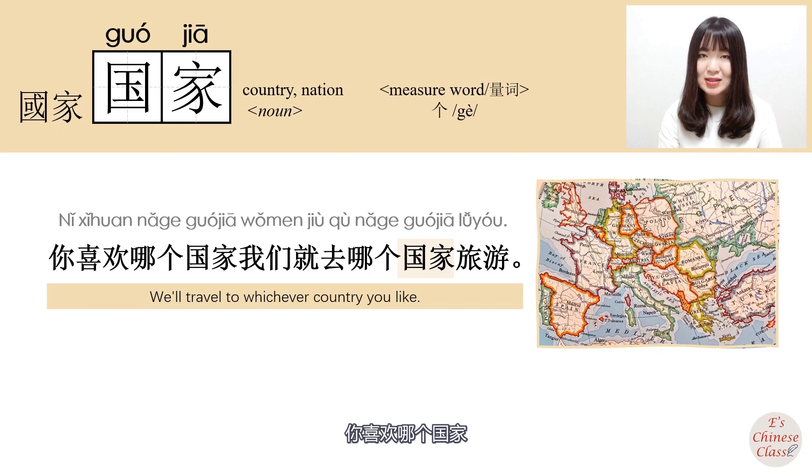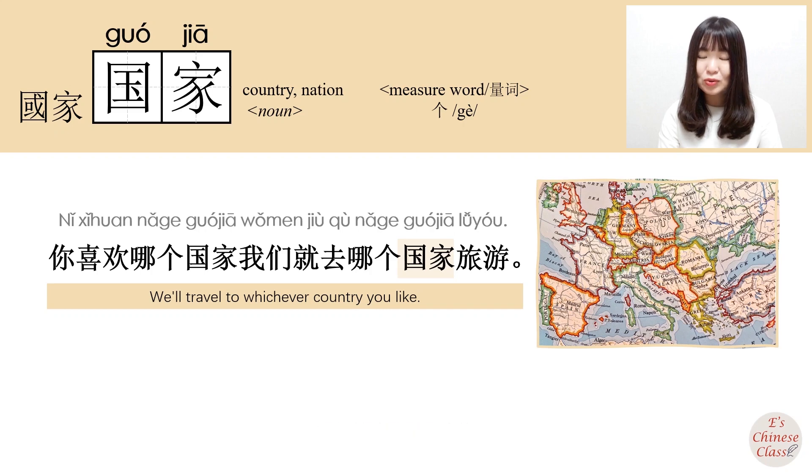你喜欢哪个国家？我们就去哪个国家旅游？(Which country do you like? We'll travel to whichever country.)